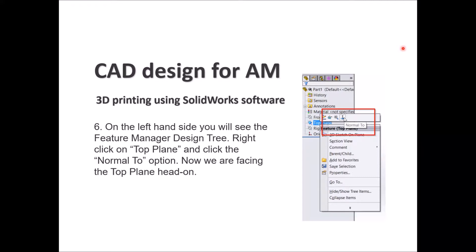Looking at the main window on the left-hand side, you will see the Feature Manager Design Tree. Go to the Top Plane, right-click, and you will see a set of options. Click on 'Normal To' — this icon means you want the main screen view to be normal to the top plane, so the top plane will be shown in 2D in front of you. In this case, you are drawing inside the top plane, as if looking at the part from the top.